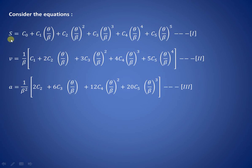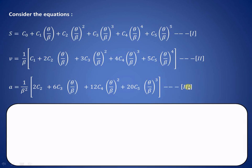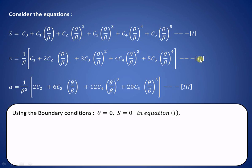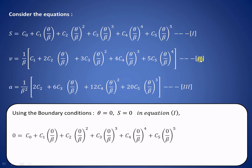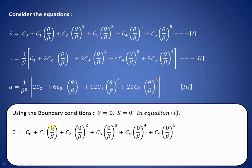We use the six boundary conditions to find the six constants c0 through c5. First, applying theta=0, s=0 in equation 1: all terms with theta vanish, giving c0 = 0. Next, applying theta=0, v=0 in equation 2: all theta-terms vanish, leaving (1/β)·c1 = 0, so c1 = 0.